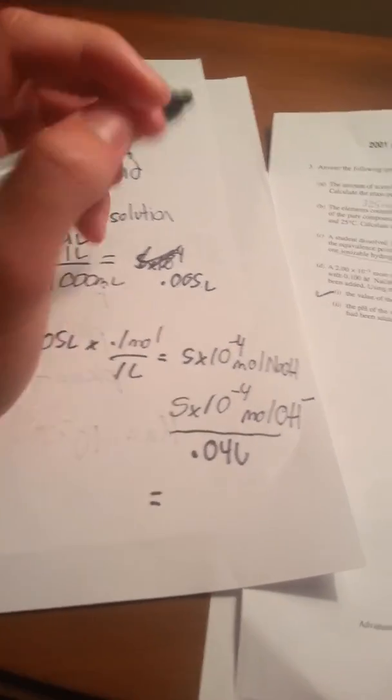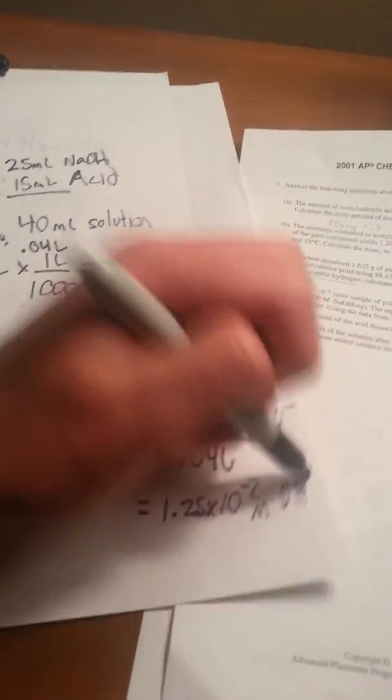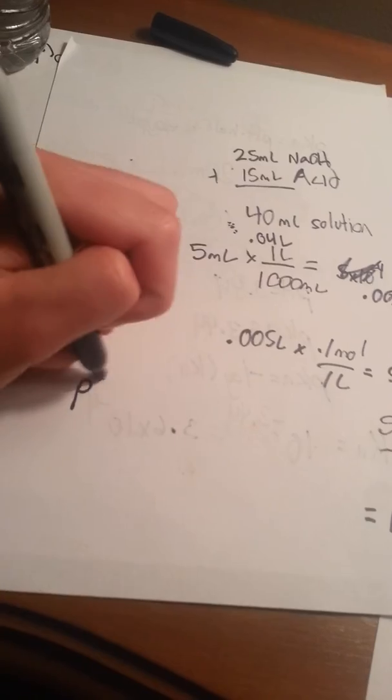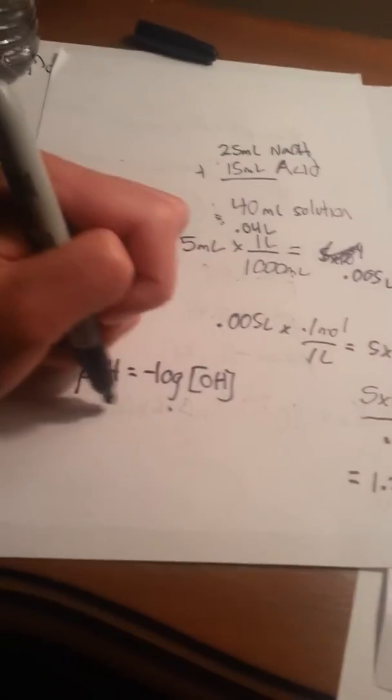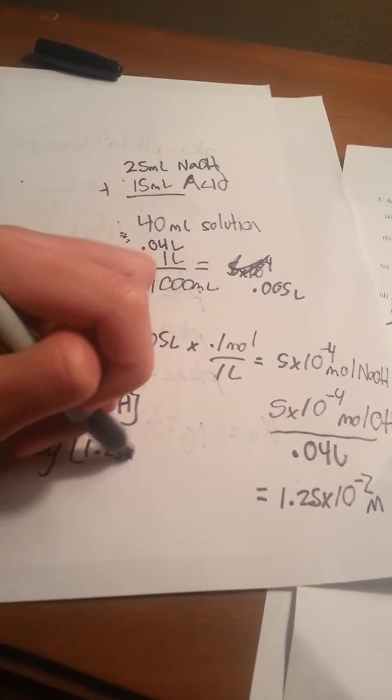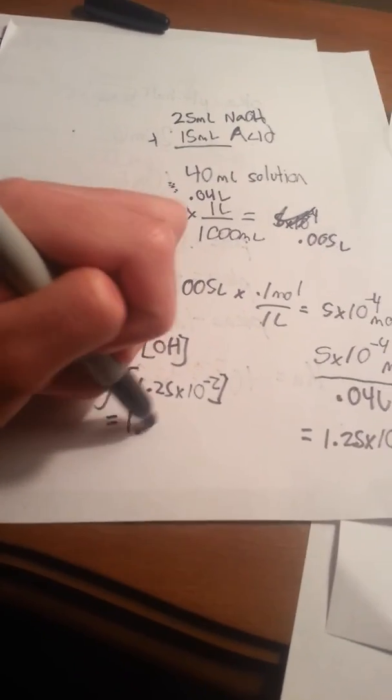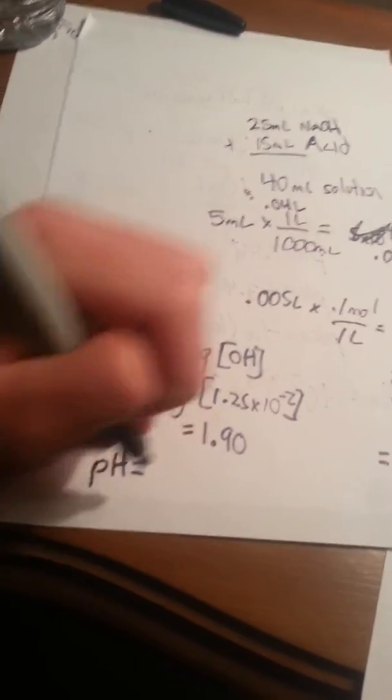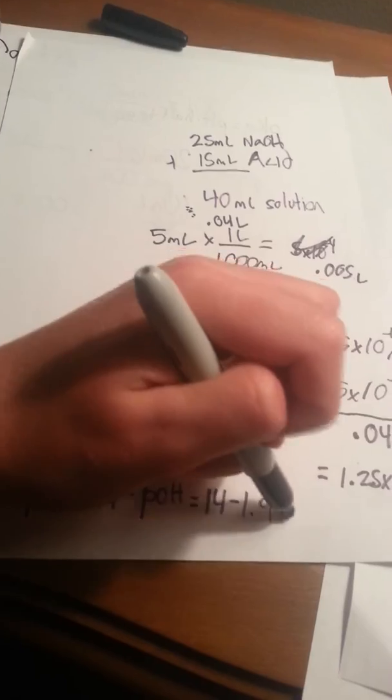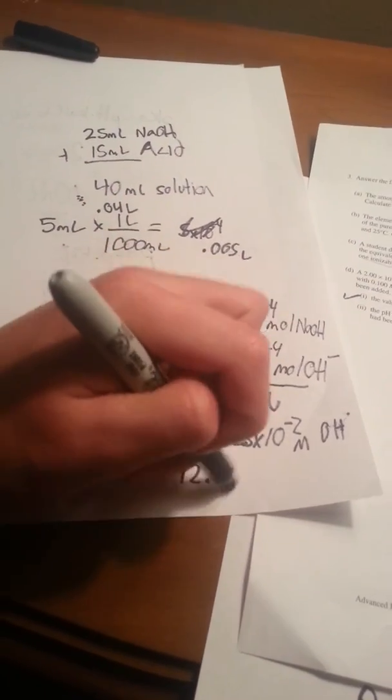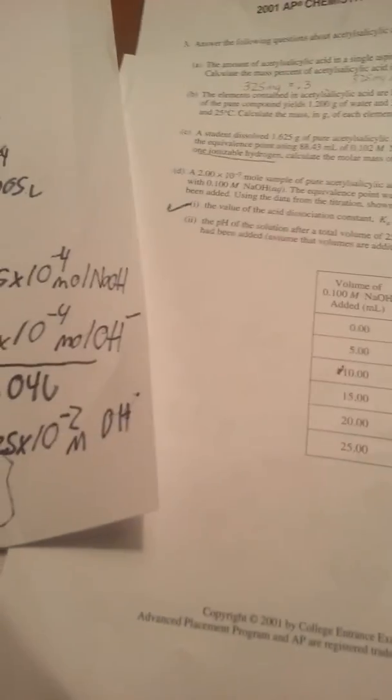So pOH equals negative log of the concentration of OH. Negative log of 1.25 times 10 to the negative 2 gives us 1.90. And pH equals 14 minus pOH, which equals 14 minus 1.9. Final answer: 12.10. This is the pH of the solution. And that's it.